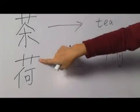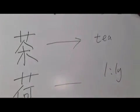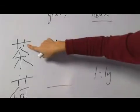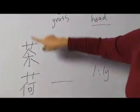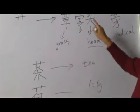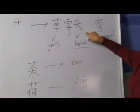They all have this radical 草字头, and this radical is on the top of the word. So that's why we say 草字头.